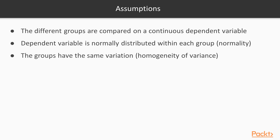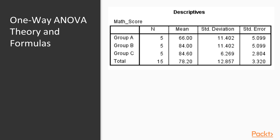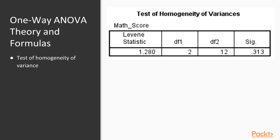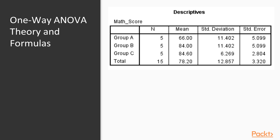The third assumption is homogeneity of variance — the groups should have approximately the same amount of variation. As with an independent samples t-test, we assess this using Levene's test. The null hypothesis for Levene's test is that there is no difference in variation among the groups; the alternative is that there is a difference. A non-significant Levene's result — as seen in this example — means we cannot reject the null hypothesis, indicating the group variances do not differ significantly. This is the same test used with an independent samples t-test.